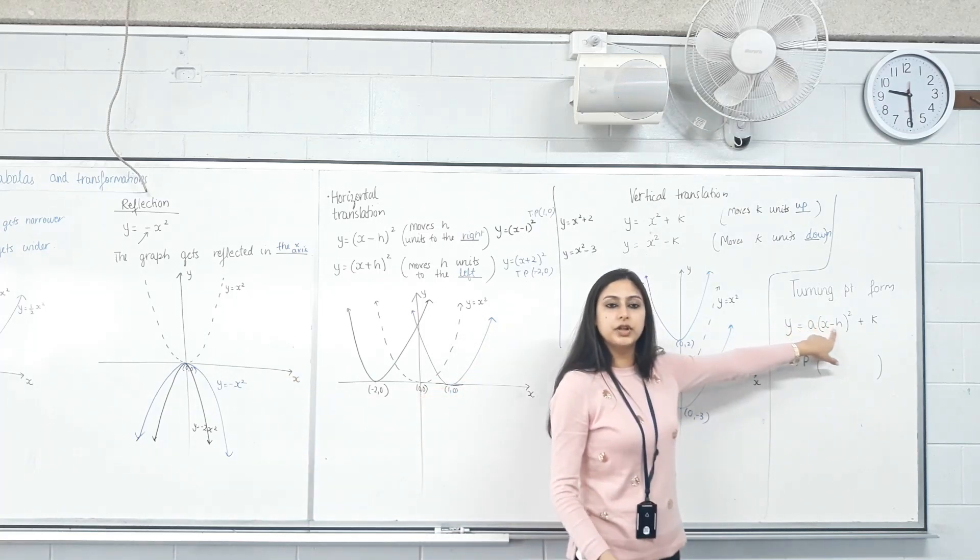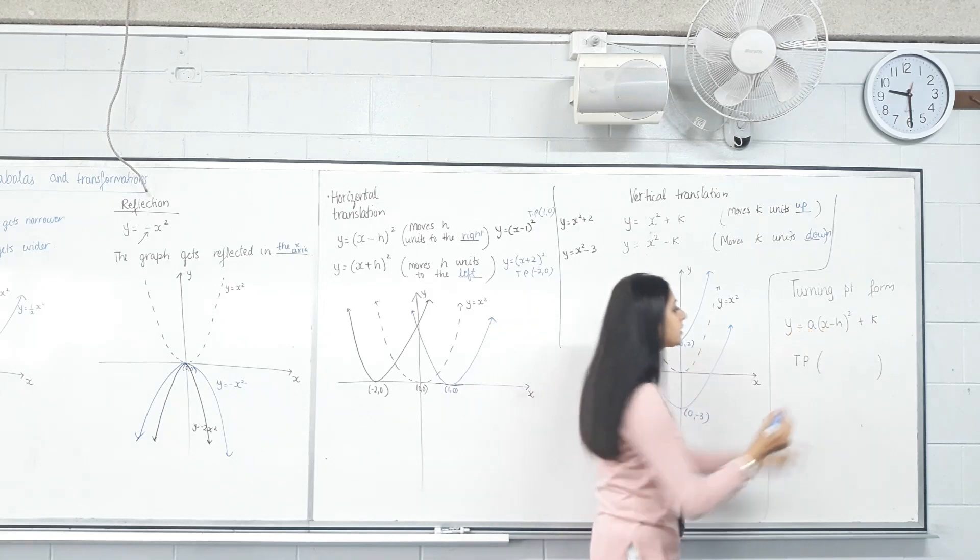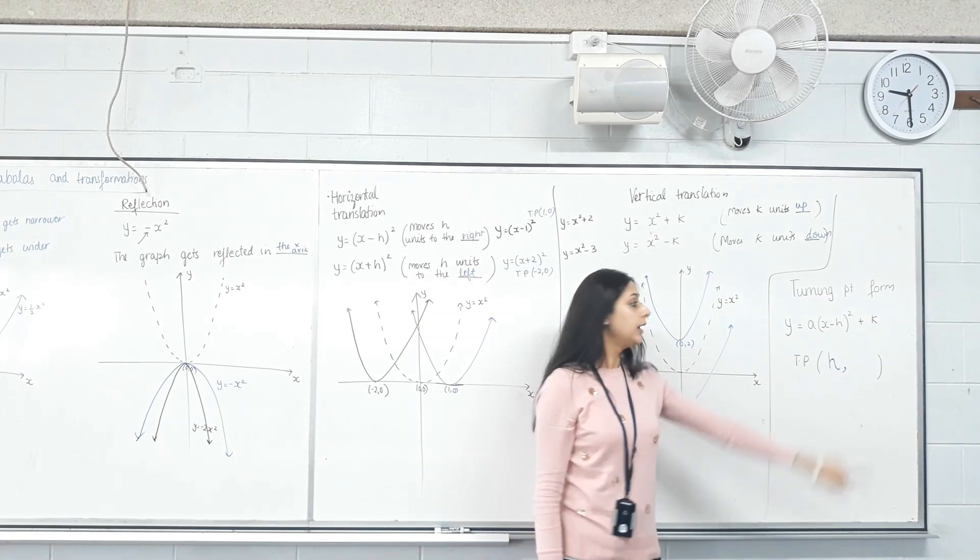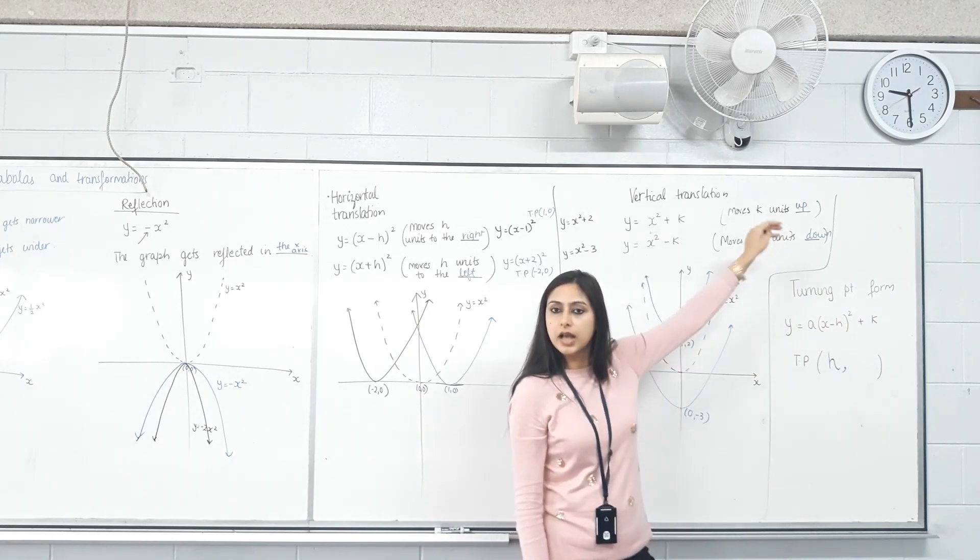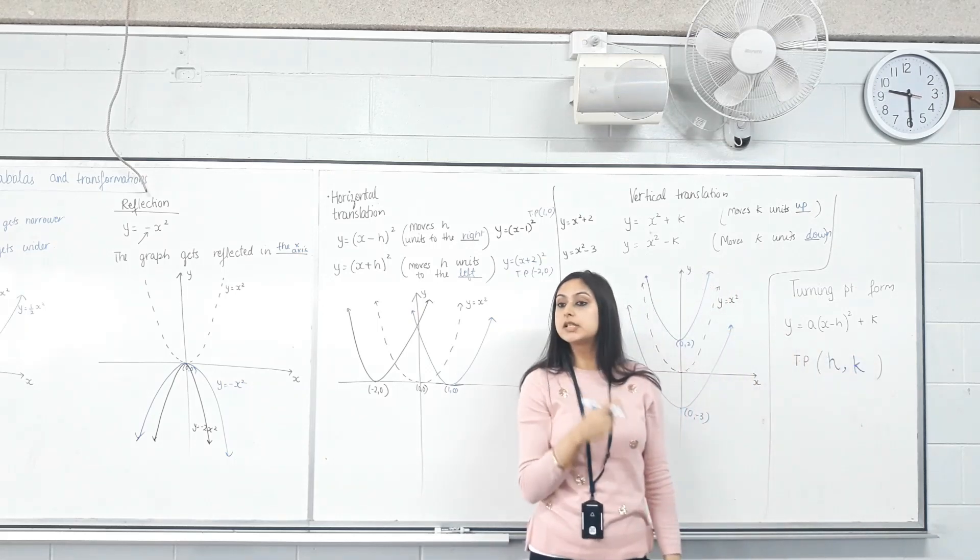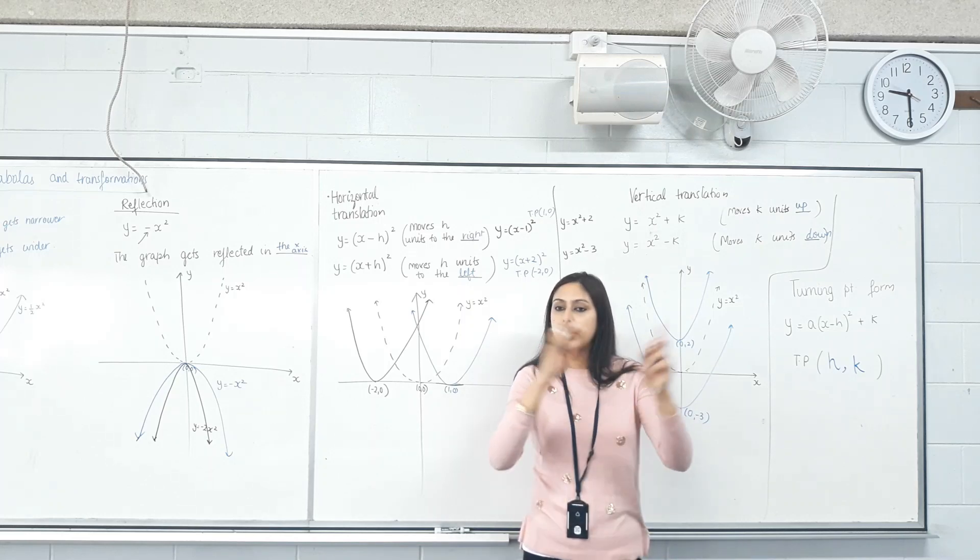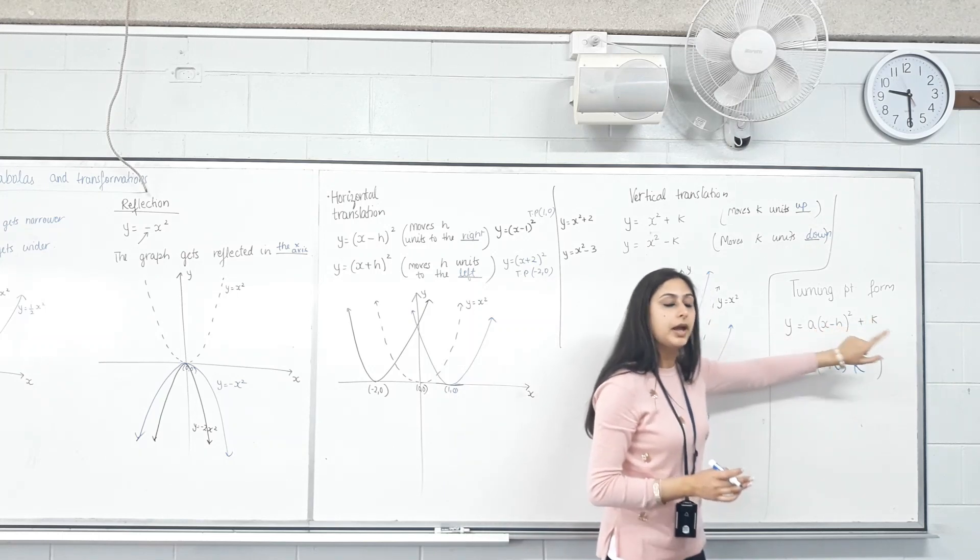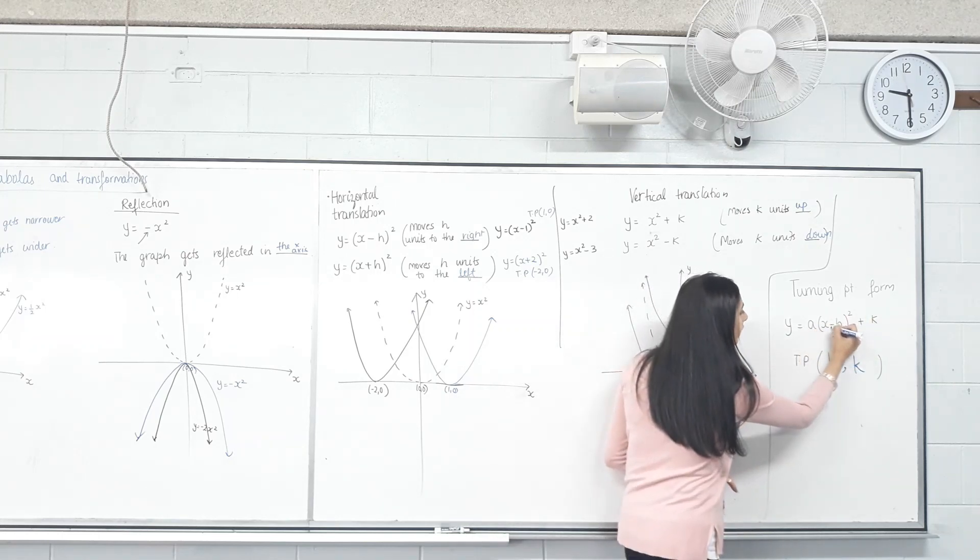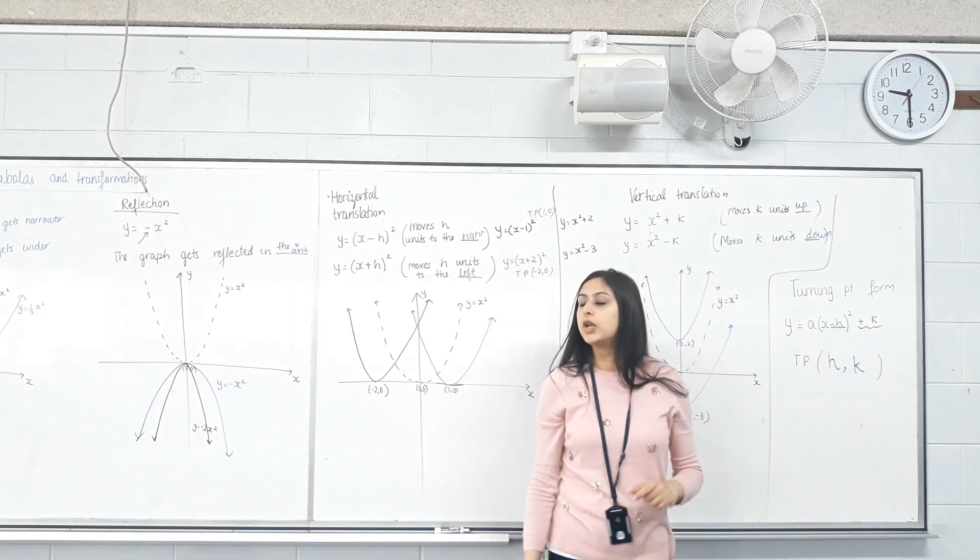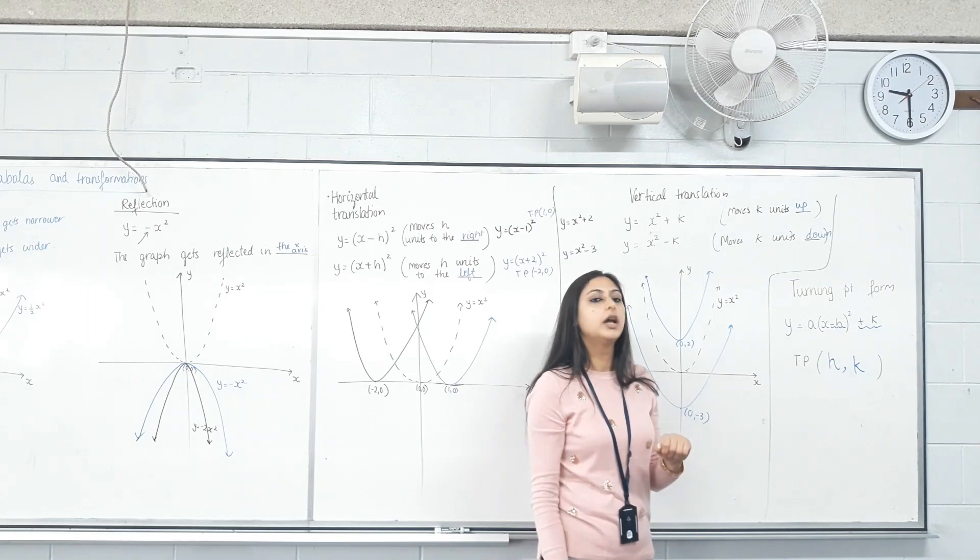Minus h means the graph will shift h units to the right. So if it's minus h, the x-coordinate of the turning point will be positive h. Plus k means we move the graph k units up. So if it's plus k, the y-coordinate of the turning point will be positive k. This is called the turning point form, where we have everything done: dilation, horizontal translation, and vertical translation. The turning point will be opposite sign of h, but the same sign as k. Are we clear on that?